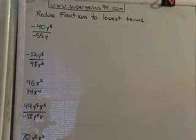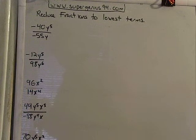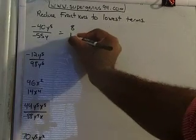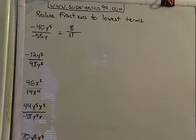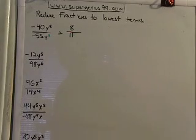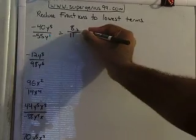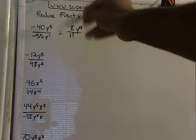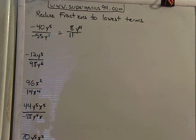Now let's focus on the numbers. What number can go into both 40 and 55? How about 5? So 40 divided by 5 is 8, and 55 divided by 5 is 11. Now let's look at the variables: y to the fifth and y to the first power. Anytime you don't see an exponent on your variable, it's understood to be to the first power. So y to the fifth over y to the first is y to the fourth, and that goes in the top. When you reduce variables, you subtract the exponents — larger minus smaller — and wherever the larger one was, that's where the result goes.